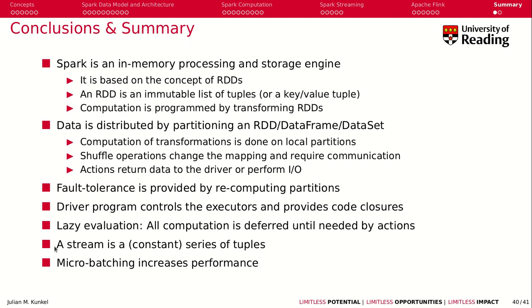When we talked about streaming, we said a stream is a constant series of tuples. As it is very inefficient to process one tuple at a time, we perform micro-batching, which groups for instance 100 or 1000 of these tuples together, or takes the tuples from one second and groups them together. This increases performance.